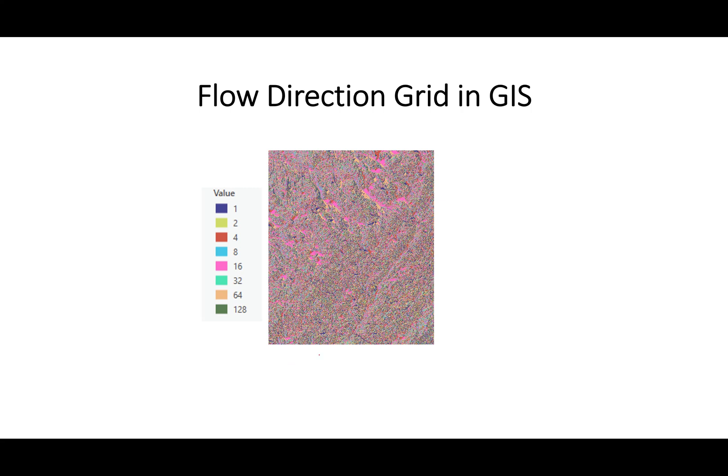When you calculate a flow direction grid in GIS using the D8 method, you will see all cells having one of these eight D8 values. Here is a sample result from GIS — this is a flow direction grid with hundreds of thousands of cells, but all cells have values ranging from 1 through 128 based on the D8 flow direction scheme. I hope you understood how to calculate the steepest downslope and how the flow direction grid gets calculated in GIS.